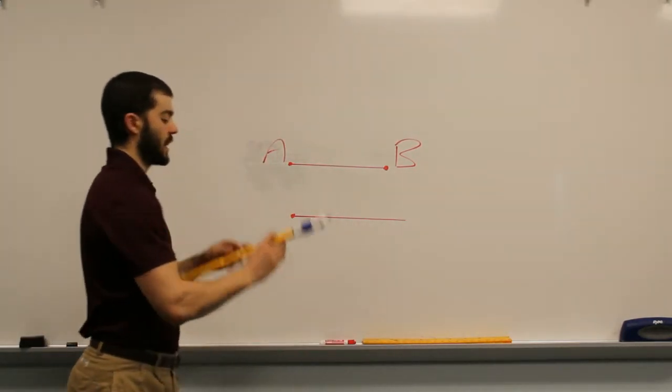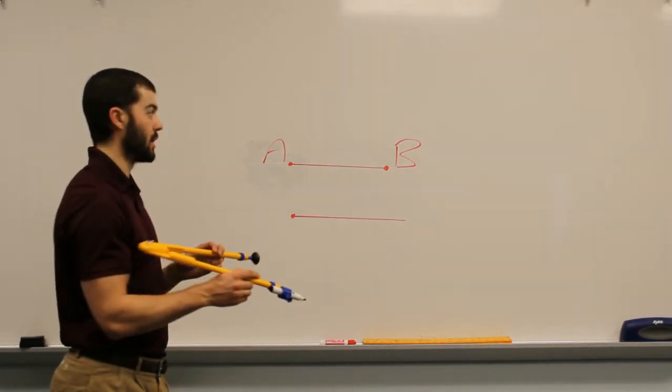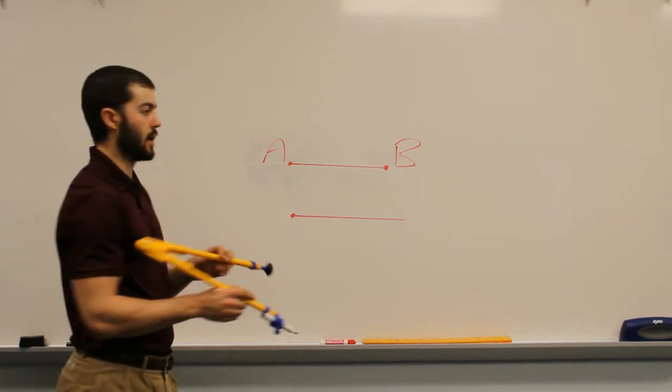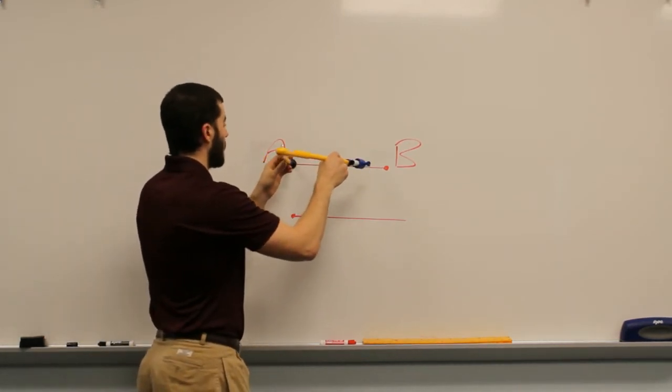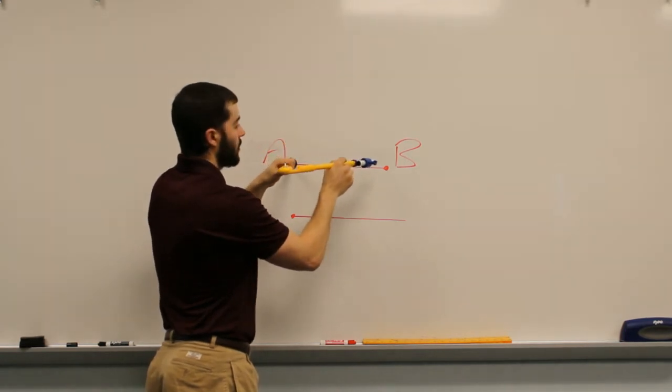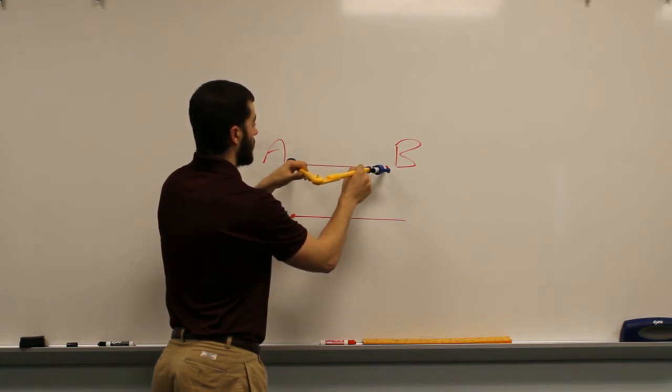So what we're going to do is take the compass and measure the width of line segment AB, or the length of line segment AB. So we put our fixed point of the compass on one point of our line segment and then we open up the compass so that it measures the width of line segment AB here.